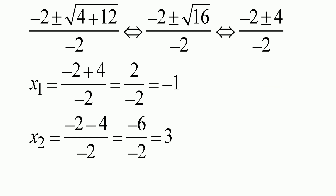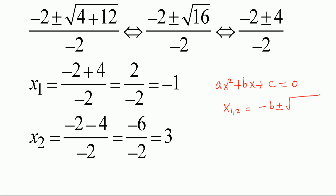So let's do a small review here. ax squared plus bx plus c is equal to 0 means x is equal to negative b plus or minus square root of b squared minus 4ac, divided by 2a. There are two solutions for x.